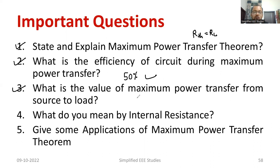What is the value of maximum power transfer from source to the load? Let us write the maximum value of power. PM is equal to E0 square divided by 4 into RL. Where E0 is the EMF or supply voltage. RL is the load resistance in ohms.